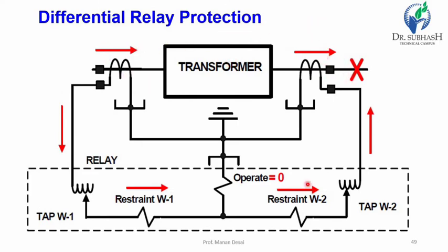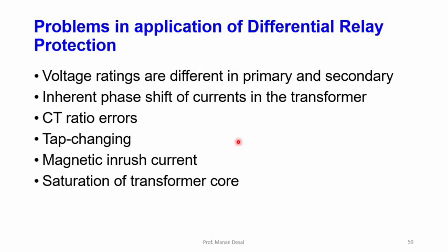For external faults, the differential relay will restrain and not operate. The CT1 and CT2 currents flow through the restraining coil, not the operating coil, so the difference I1 minus I2 is zero and the relay will not operate.